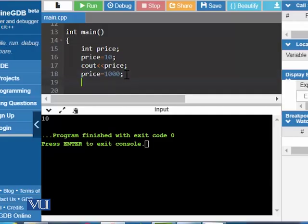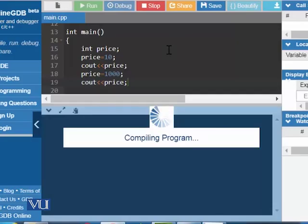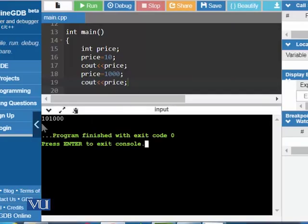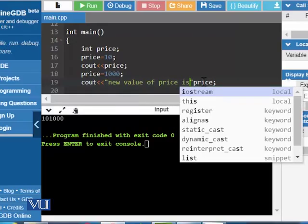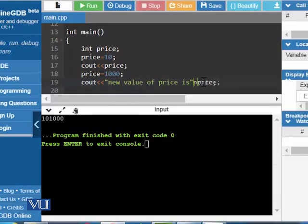So if now you write Cout statement, it will show 1000 after 10. So it is showing 10 and 1000. So let us put something over here. New value of price is 10.